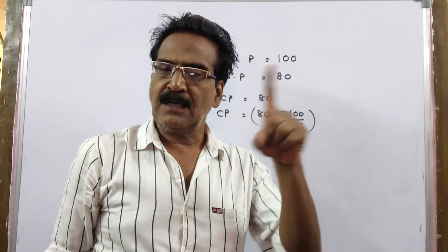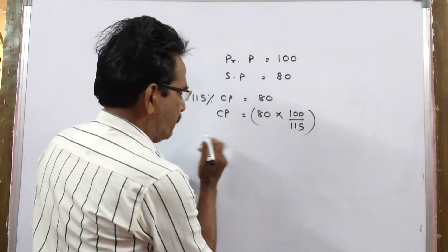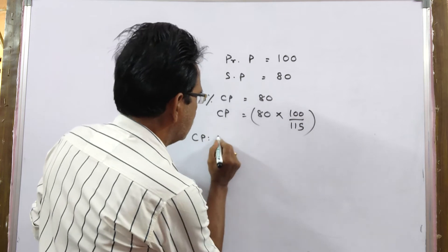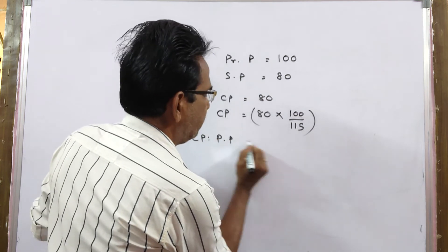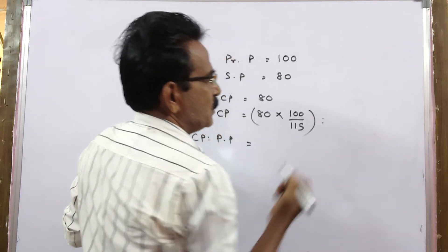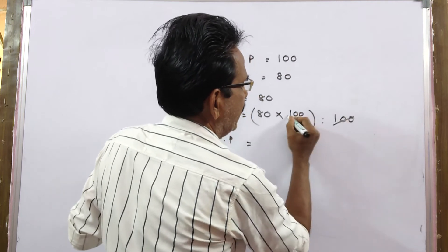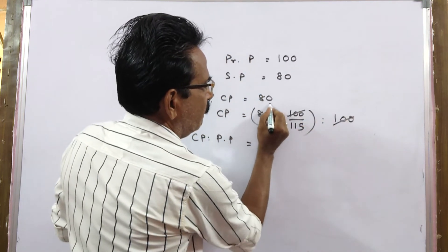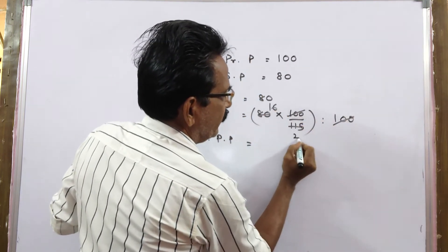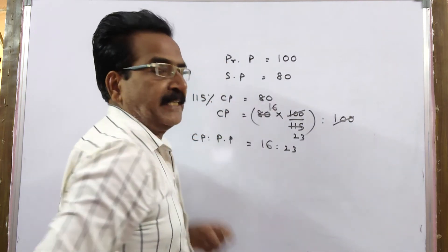We want the ratio of cost price and printed price. Cost price is to printed price is 100. So 100 gets cancelled. 5 into 16, 5 into 23. So your answer is 16 is to 23.